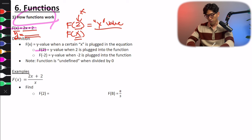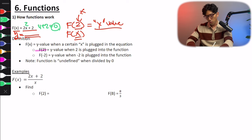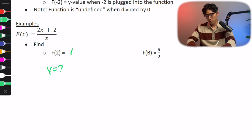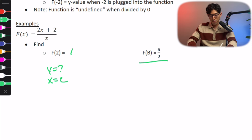For example, when you plug in f(2) for this function, you're going to plug in 2 for x, get 4 plus 2, which is 6. So when x equals 2, your y value equals 6 — f(2) equals 6. Another variation is something like f(b) equals 8/3: b is the x value, 8/3 is the y value, and you need to find what x is when y equals 8/3.